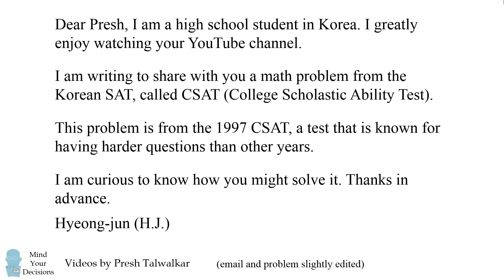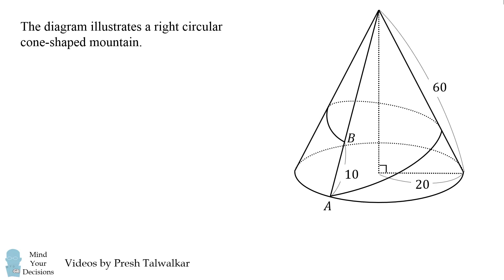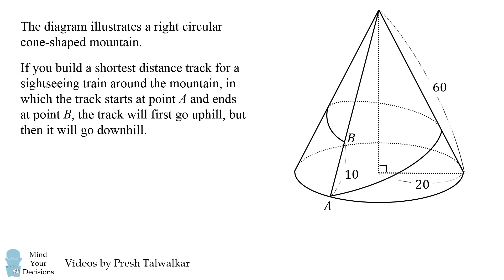This email and problem have been slightly edited for presentation purposes. So here's the problem. The diagram illustrates a right circular cone-shaped mountain. If you build a shortest distance track for a sightseeing train around the mountain in which the track starts at point A and ends at point B, the track will first go uphill, but then it will go downhill. What is the length of the downhill track?